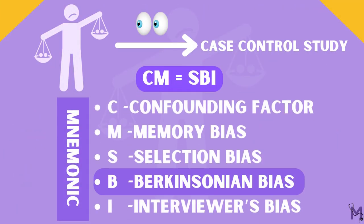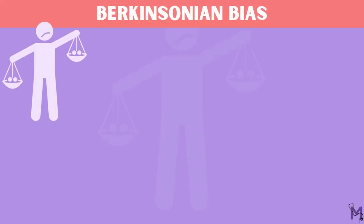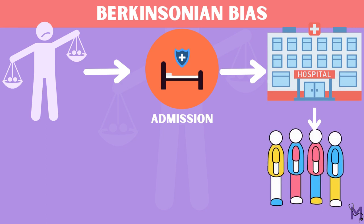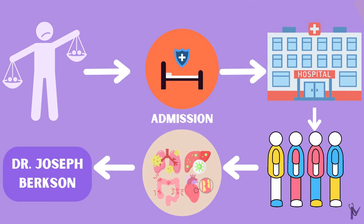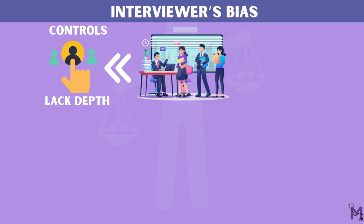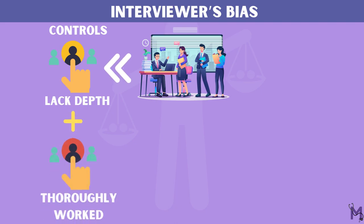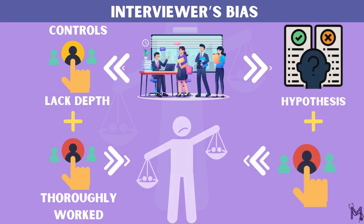The B stands for Berksonian bias. This bias arises because of different rates of admission to hospitals for people with different diseases, and occurs in hospital-based studies. This bias is named after the doctor who recognized this problem, Dr. Joseph Berkson. Lastly, the I stands for interviewer's bias. The interviewer may either lack depth in controls while the cases are thoroughly worked up, or the interviewer might know the hypothesis as well as knowing who the cases are, leading to bias.